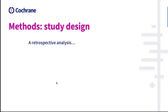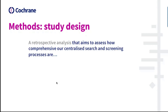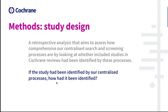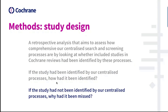The retrospective analysis aims to assess how comprehensive our centralised search and screening processes are by looking at whether included studies in Cochrane reviews had been identified by these processes. We wanted to know if the study had been identified by our centralised processes, how had it been identified? And if the study had not been identified by our centralised processes, why had it been missed?